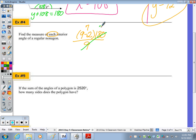20 is right. Then 7 times 20 is 140. The measure of each interior angle is 140 degrees.